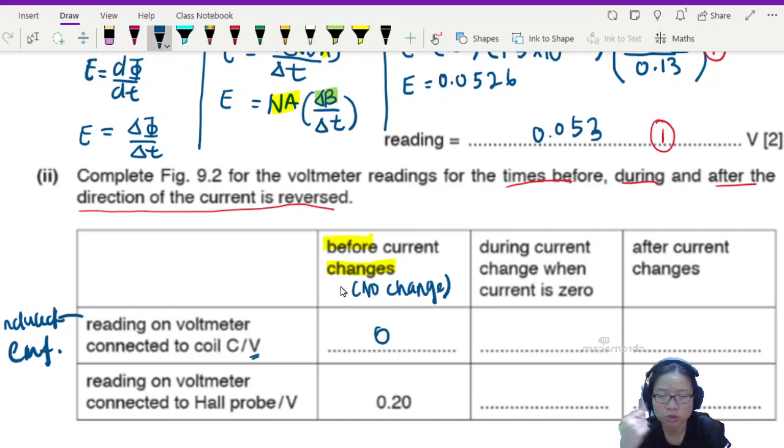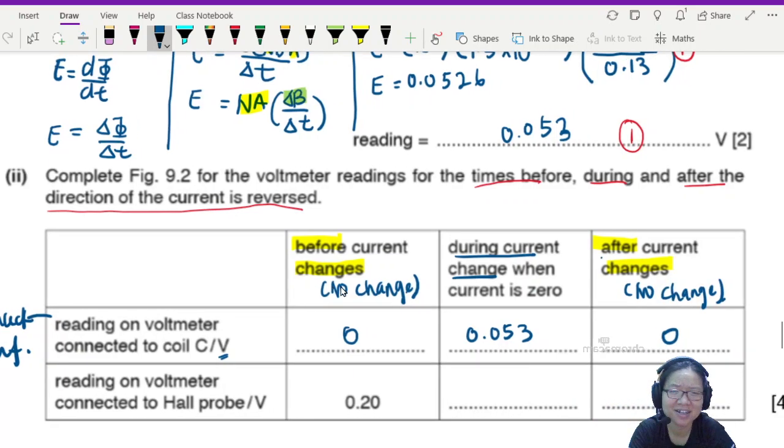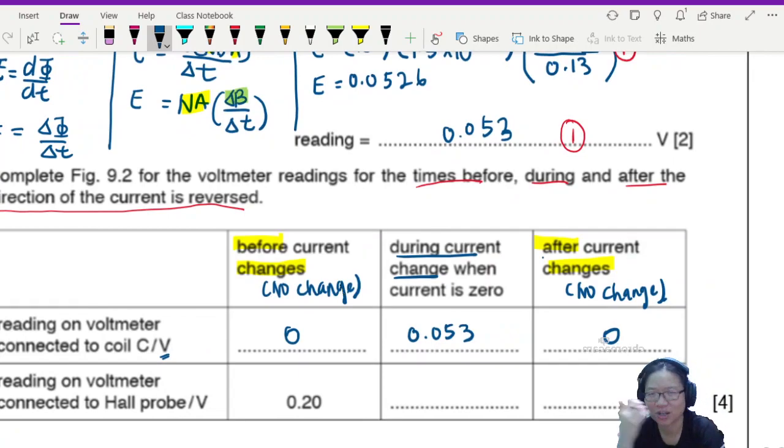No need to write unit. During the change, it's like English question, right? So while you are changing, it's 0.053. After the change, got change or not? No change. Change already. Do you want to change what? No change. 0. This entire row correct is 1 mark.